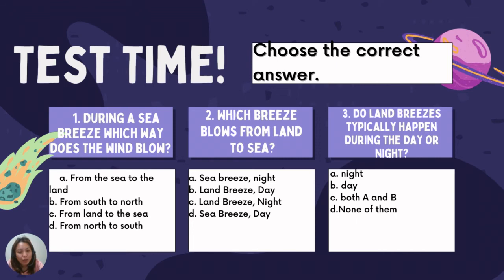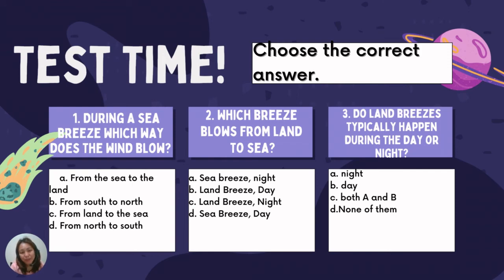Second question: Which breeze blows from land to sea? A — sea breeze at night, B — land breeze at day, C — land breeze at night, or D — sea breeze at day? The answer is letter C — land breeze at night.